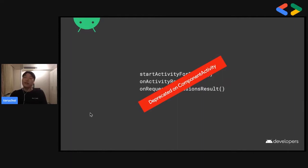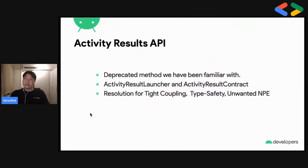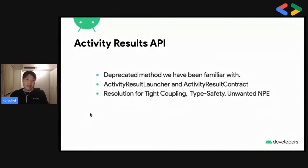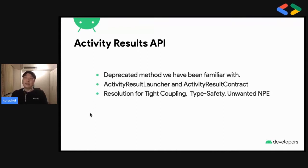So instead of using those, there are some suggestions. We can use something called ActivityResultLauncher and ActivityResultContract. By using this, we can resolve some problems we face, such as type coupling, type safety, or unwanted NullPointerExceptions. Because after calling StartActivityForResult, we have to implement onActivityResult inside the activity or fragment, which could cause type coupling between logic and view, and by mistyping, unwanted NullPointerExceptions and type safety problems.